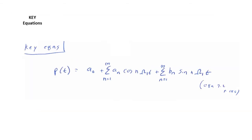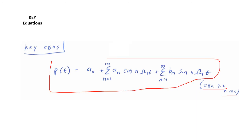Before we start our solution, we decide which key equation to use. We'll use equation 7.2 from page 185 of our textbook, which tells us that p(t) equals a₀ plus the summation from n=1 to infinity of aₙ·cos(nω₁t) plus the summation from n=1 to infinity of bₙ·sin(nω₁t).